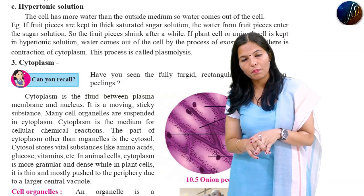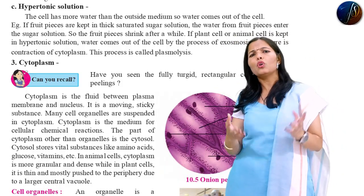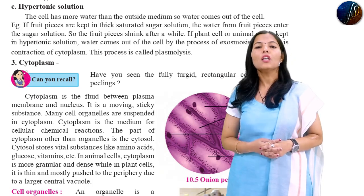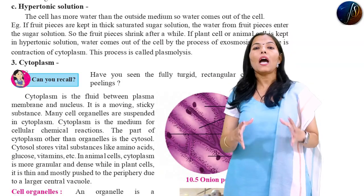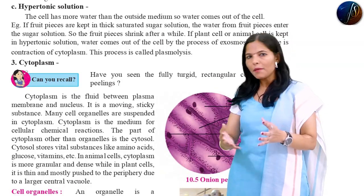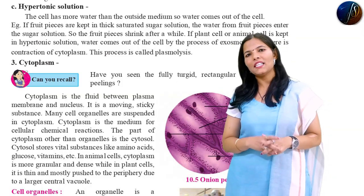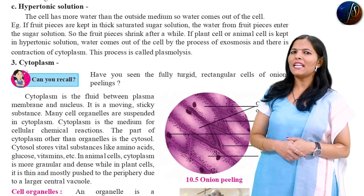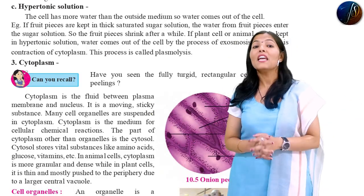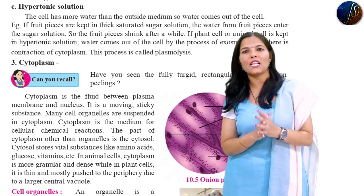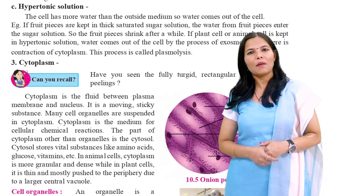Hypertonic, hypotonic, and isotonic solutions — write examples for each in the comments. We have covered plasmolysis as a cell property. I think in this lecture the types of solution and all the concepts are now clear. Like, subscribe, and share this video with your friends — it is free of cost. See you in the next interesting topic. Bye everyone.